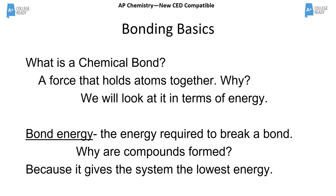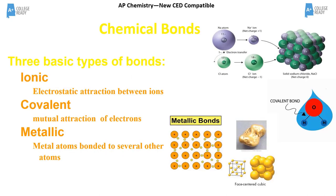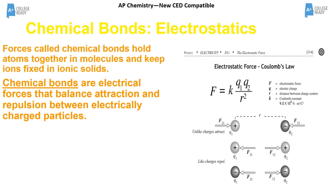When you form bonds it releases energy, and when you break bonds it takes energy. We settle these types of bonds into three basic types: ionic, where one thing takes electrons and the other gives electrons away creating ions that attract each other; covalent, where things share electrons — either polar covalent or non-polar covalent; and metallic bonds, where metals are stuck together in a sea of electrons.